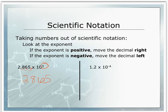The second example, 1.2 times 10 to the negative 4th, has a negative exponent. Therefore, we're going to need to move our decimal in a direction that makes 1.2 smaller — we're going to move our decimal to the left four times: 1, 2, 3, 4. We're going to need to add zeros in those empty places to make our number smaller than 1, which correlates to the negative exponent.